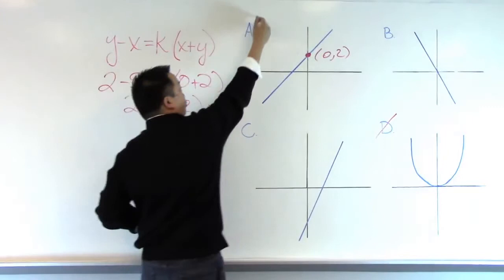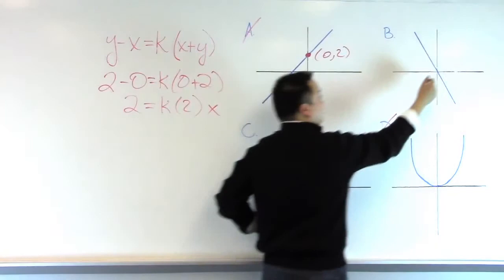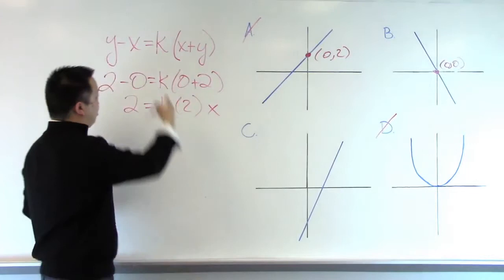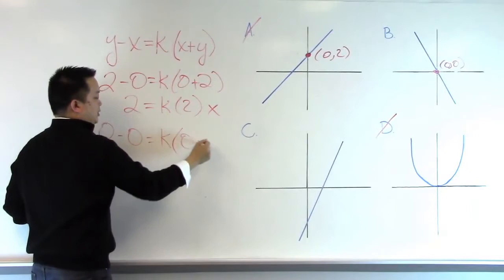Moving on to answer choice B, we can use the very convenient point at the origin, and when I use the ordered pair 0, 0, and plug that into the equation, we get 0 minus 0 is equal to k times 0 plus 0.